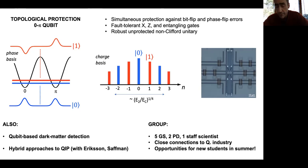The group at the moment involves five grad students, two postdocs, one staff scientist. We've got close connections with quantum industry, especially Google. We have opportunities for new students starting in summer 2021.